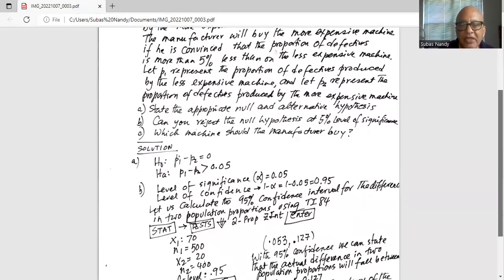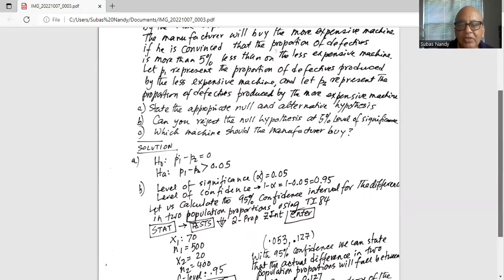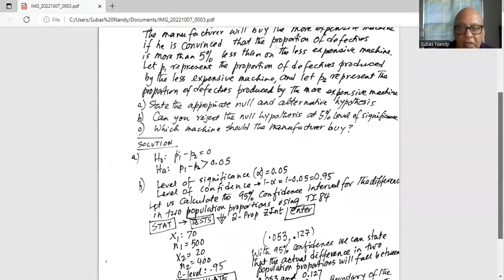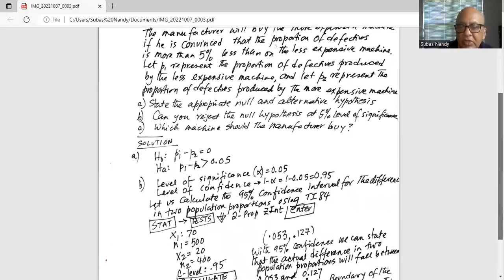Let us calculate the 95% confidence interval for the difference in the two population proportions using TI-84. So we go to stats, press the stat button, then highlight tests on the top row. Then we scroll down to 2prop z int. And then we will press enter.